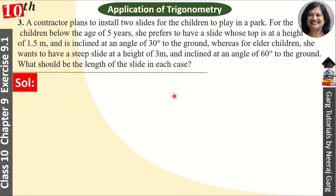The contractor is planning to build two slides in the park. One for the small children, which is 5 years old and one for the elder children. So we have to make two different diagrams.